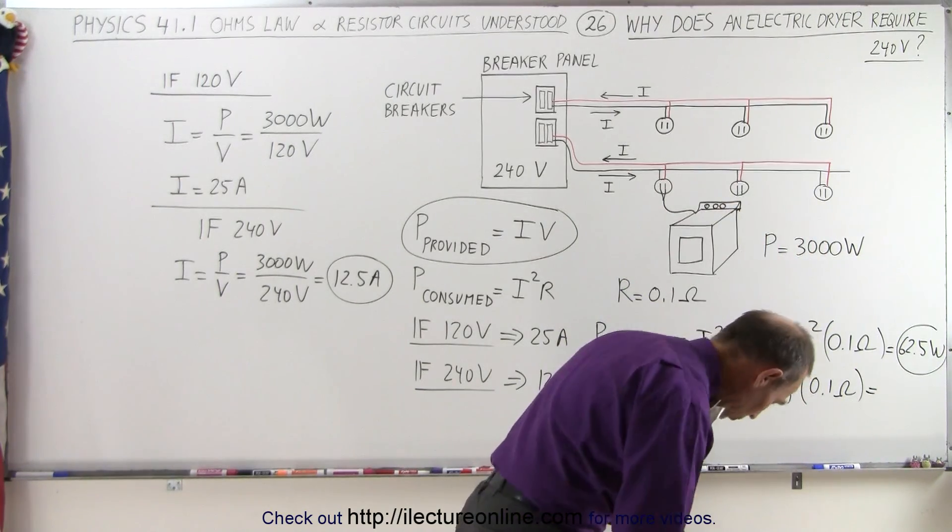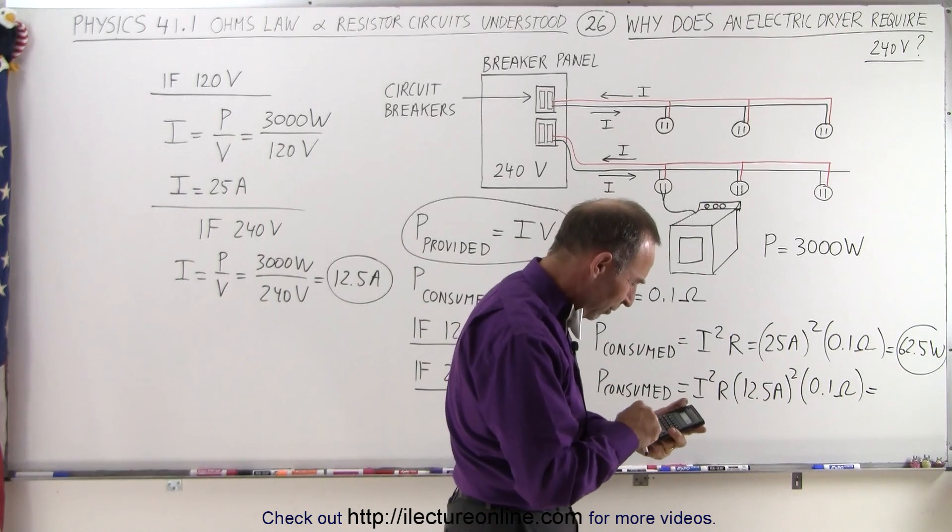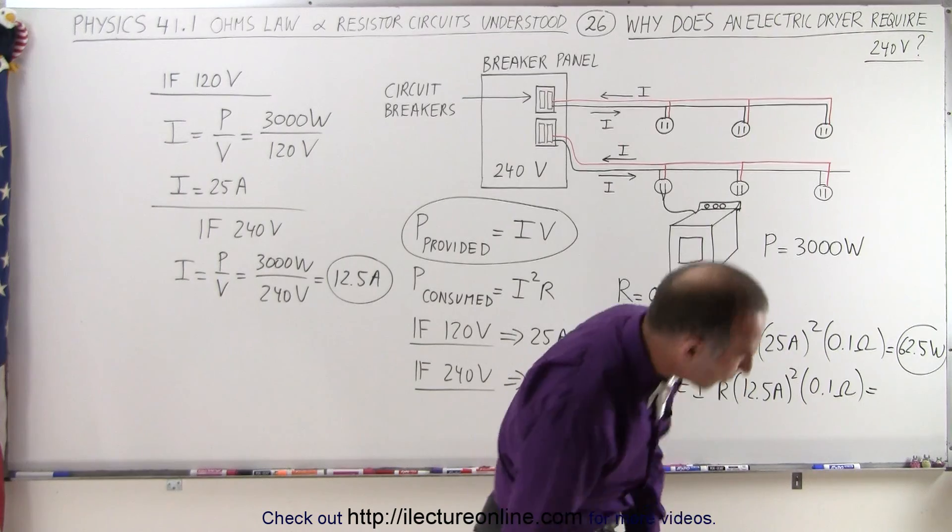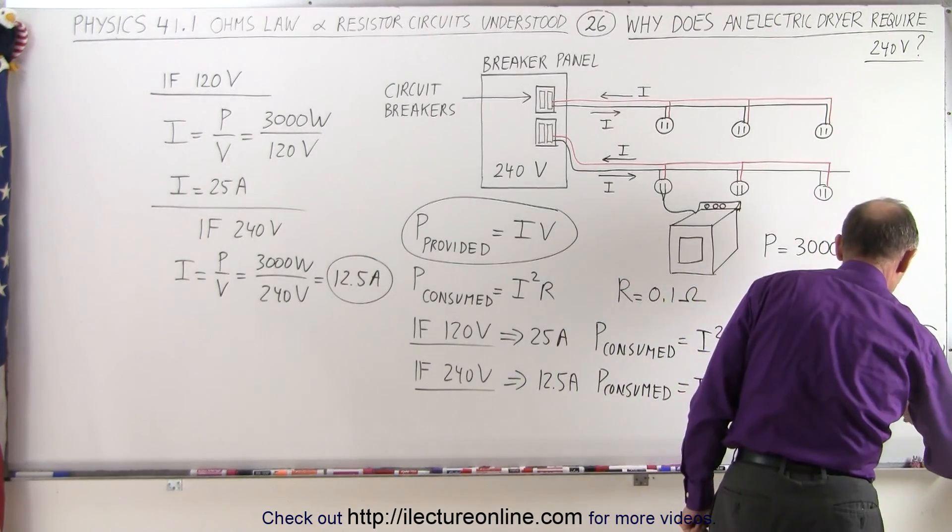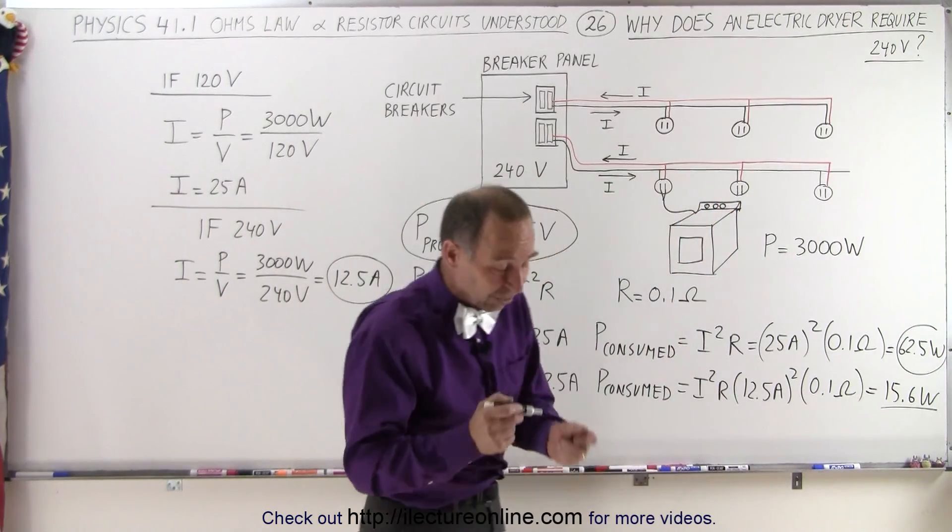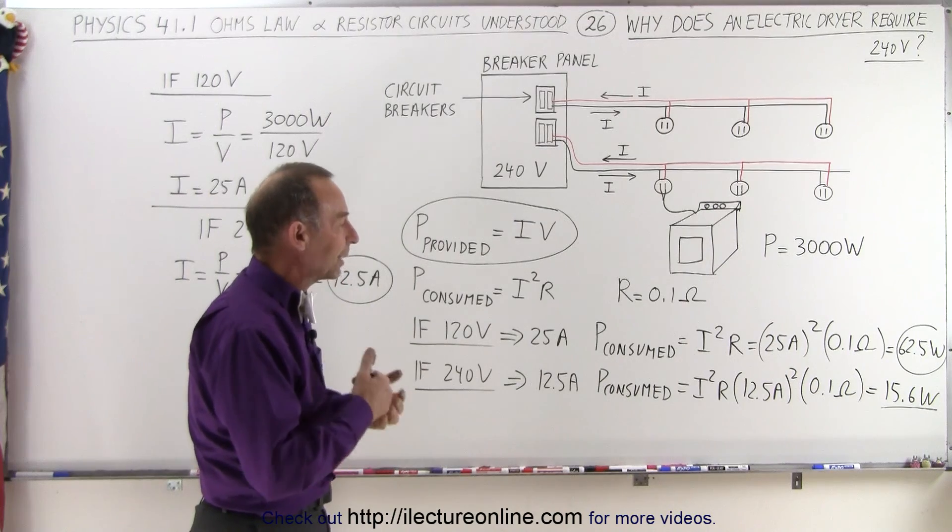Whoa, there goes my calculator! All right, so 62.5 divided by 4. Now it's only 15.6 watts, roughly speaking. 15.6 watts, and that's a whole lot less heat being dissipated by the wires. And so therefore, the chance of a fire starting is quite a bit less.